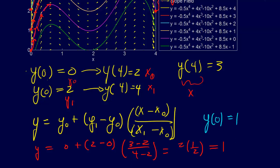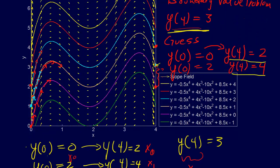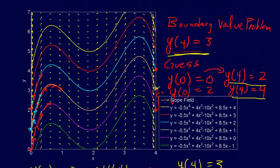Sure enough, when we use y of 0 equals 1, we start there and follow along, and we get y of 4 equals 3, just like we wanted. So we come up with the right answer. That is the shooting method.